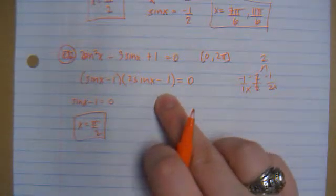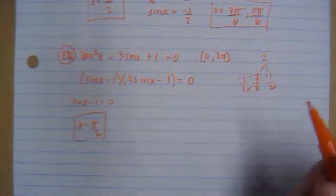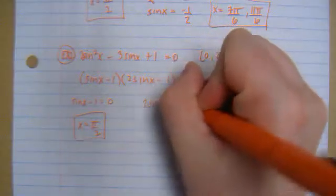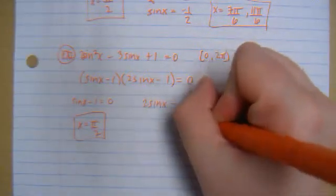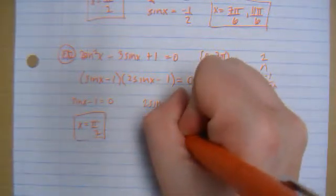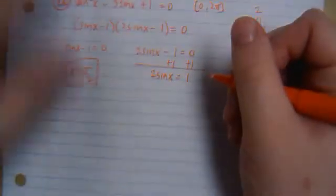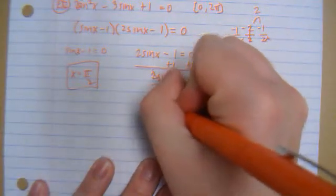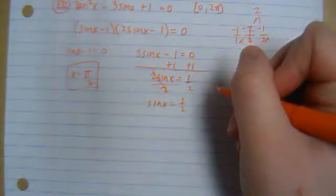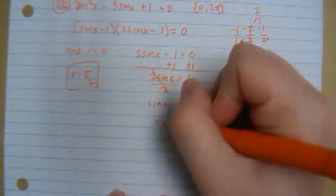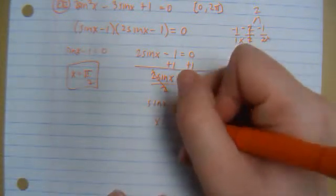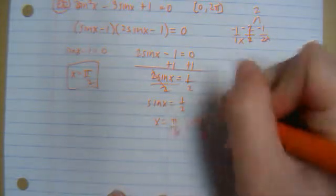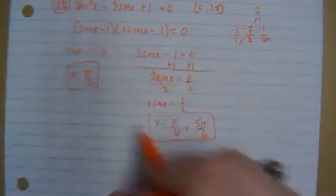Then this one was a little different. Previously it was minus. So 2 sine x minus 1 equals 0. So I'm going to add 1 to both sides. And then divide by 2. So now where is your sine positive 1 half? So positive 1 half. Your y value is at pi over 6 and 5 pi over 6. So those are your answers as well.